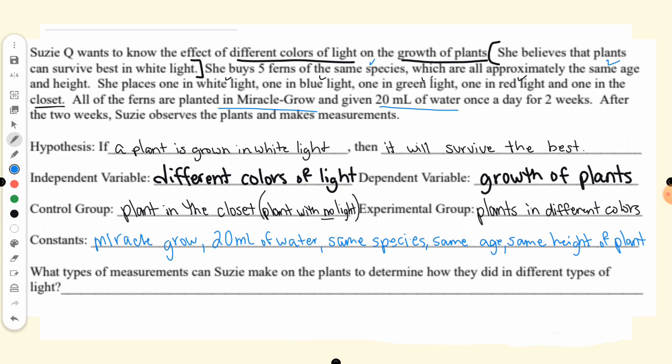What types of measurements can Suzy make on the plants to determine how they did in different types of light? She can measure how tall they grew, she can measure how many leaves they had — anything that is going to show a difference, but she would have to commit to how she is going to measure them. So those are the different parts of an experiment. When given an experiment, you can identify the different variables.